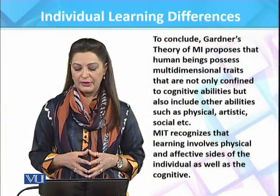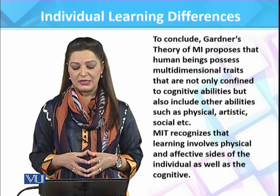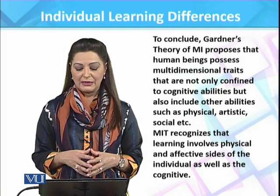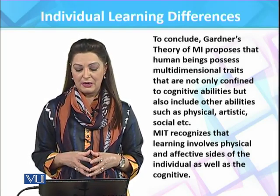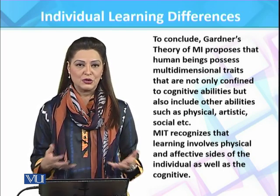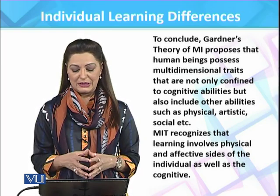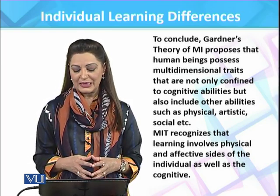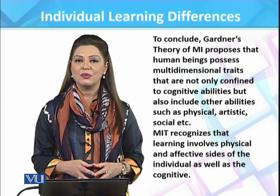To conclude, Gardner's theory of multiple intelligences proposes that human beings possess multi-dimensional traits that are not only confined to cognitive abilities but also include other abilities such as physical, artistic, and social. Multiple intelligence theory recognizes that learning involves the physical and affective sides of the individual as well as the cognitive.